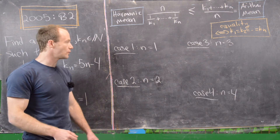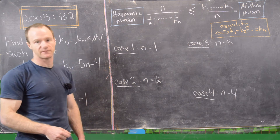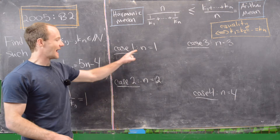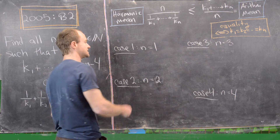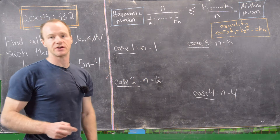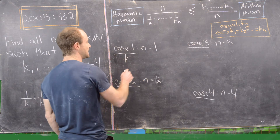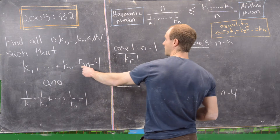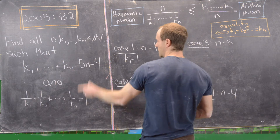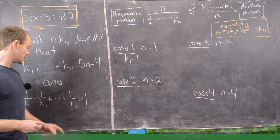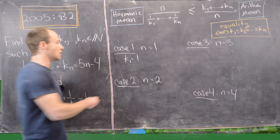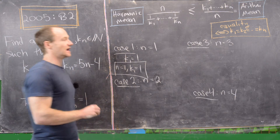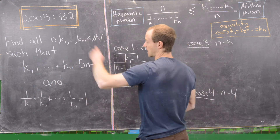We argued we only need to consider n = 1, 2, 3, and 4. For n = 1 and n = 4, we have equality in the harmonic-arithmetic mean, which means all k values are equal. For n = 1, we simply take k₁ = 1. Plugging in: 5(1) − 4 = 1 ✓, and 1/1 = 1 ✓. So n = 1, k₁ = 1 is a solution.